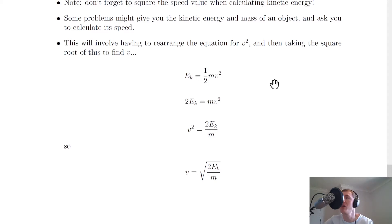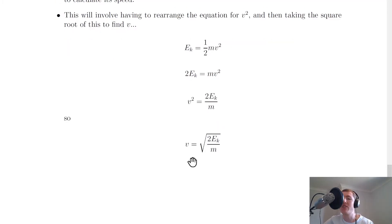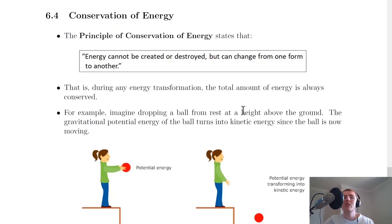Starting with the kinetic energy equation and multiplying both sides by two gives 2Ek = mv². Dividing both sides by m gives v² = 2Ek/m, and then square-rooting both sides gives v = √(2Ek/m). You can either rearrange algebraically first or just substitute your numbers in and rearrange — both approaches are fine.